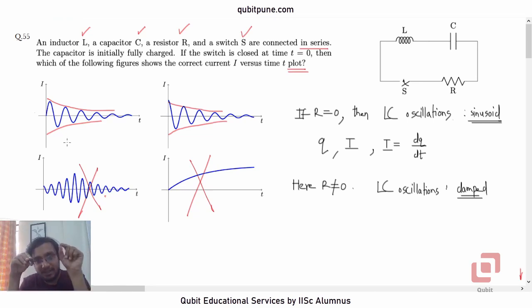Now, this is where whether it is charge or current, that is what we want. We know that they have given us that initially, the capacitor is fully charged. Initially, the capacitor is fully charged. It means at t equal to 0, q is maximum. At t equal to 0, q is q max.